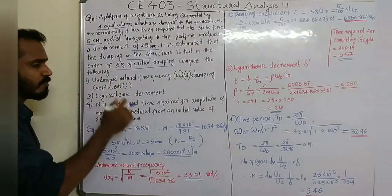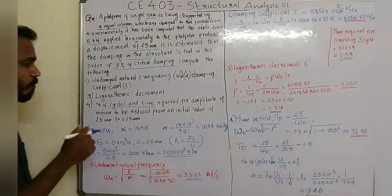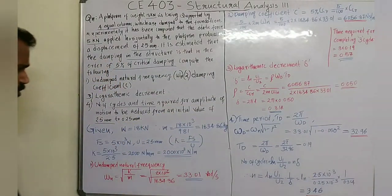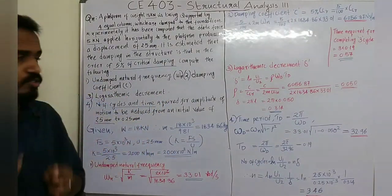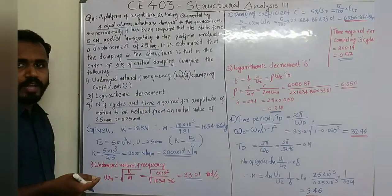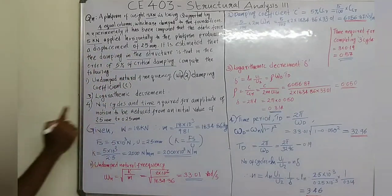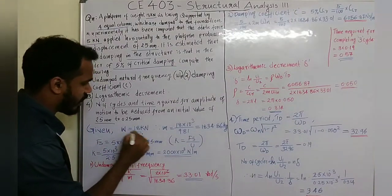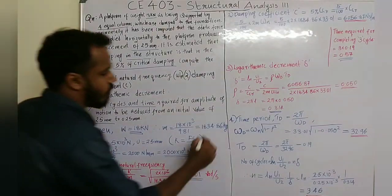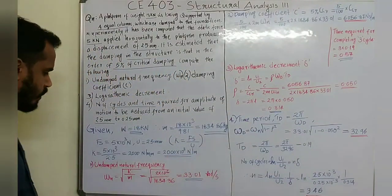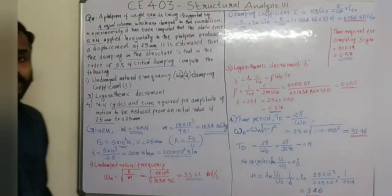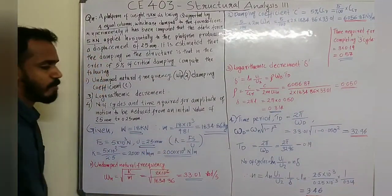Compute: first, undamped natural frequency; second, damping coefficient; third, logarithmic decrement; and fourth, number of cycles and time required for amplitude to reduce from 2.5mm to 0.25mm. Given data: weight is 80 kilonewton, static force Fs is 5 kilonewton equal to 5 into 10 raised to 3 newton, and u is equal to 2.5mm.